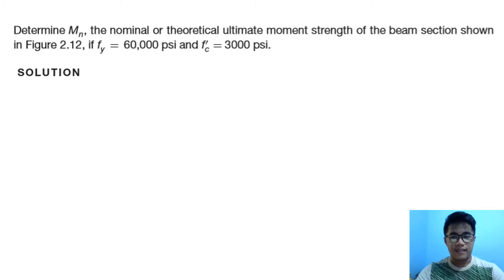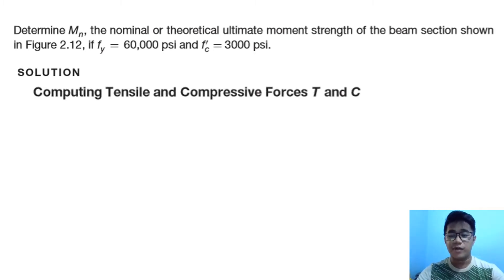Next, we compute the tensile and compressive forces. The tension is given by the formula: area of the steel multiplied by fy. The area of steel is 3 inches squared. Our fy is 60,000 psi, but we want kips, so divide by 1,000 to get 60 kips per square inch. Multiplying 3 by 60, we get 180 kips—that is our tensile force.